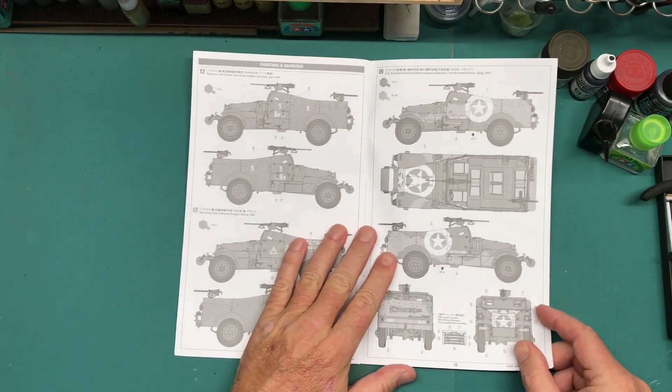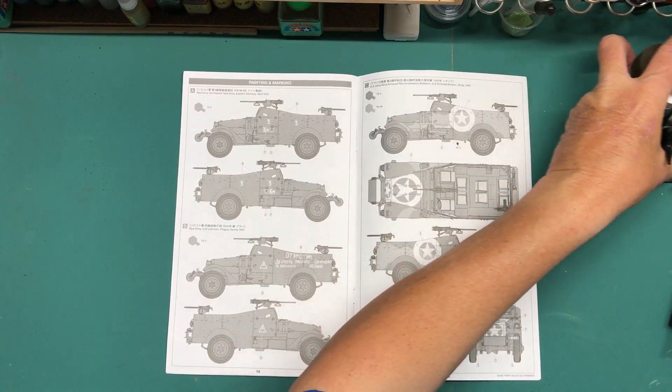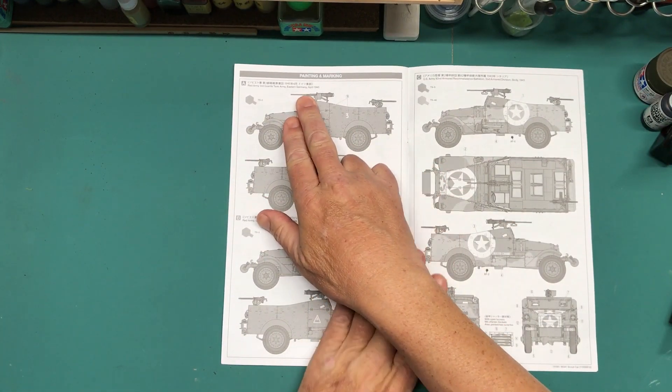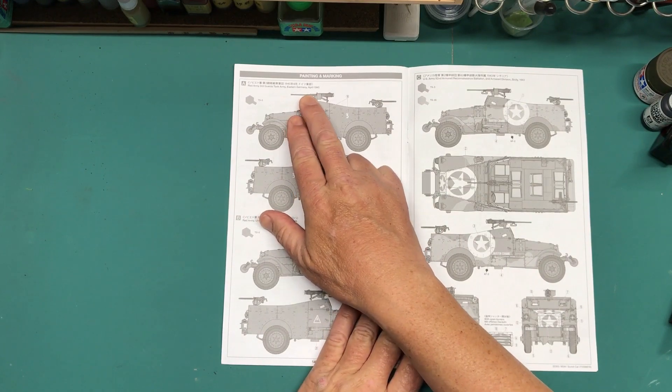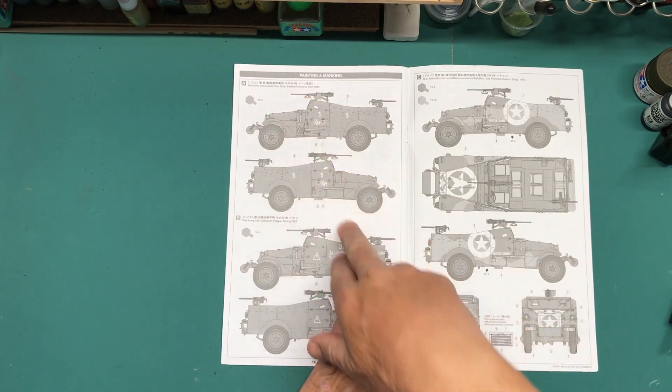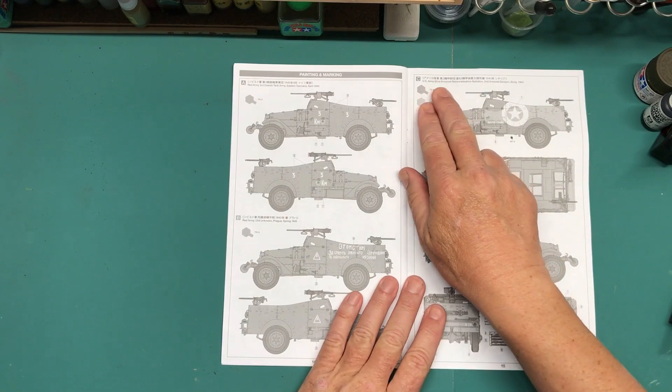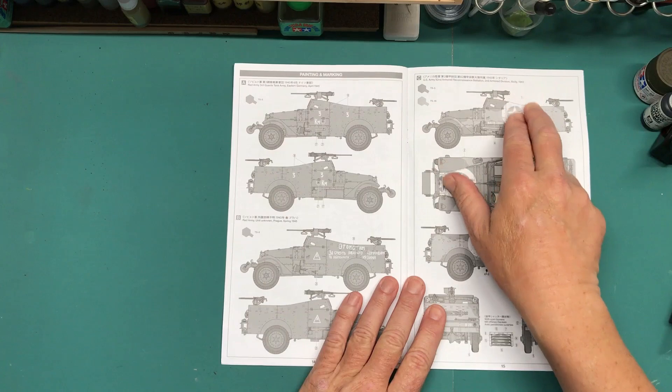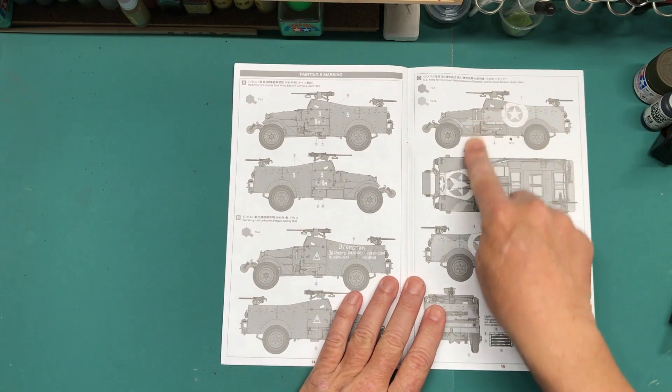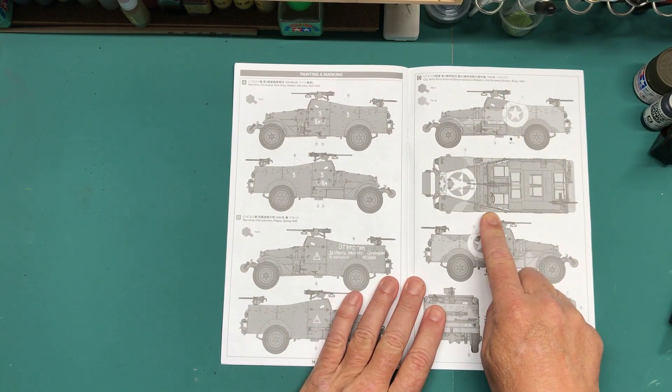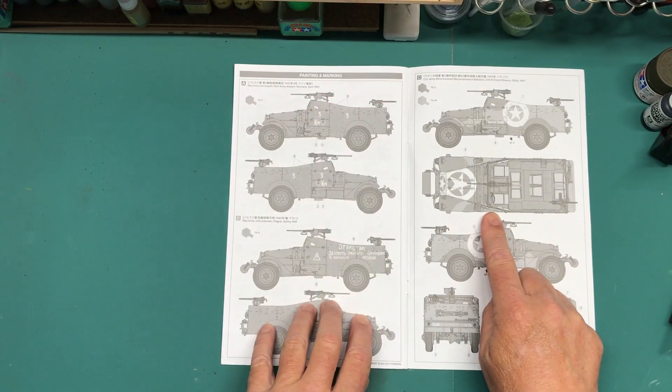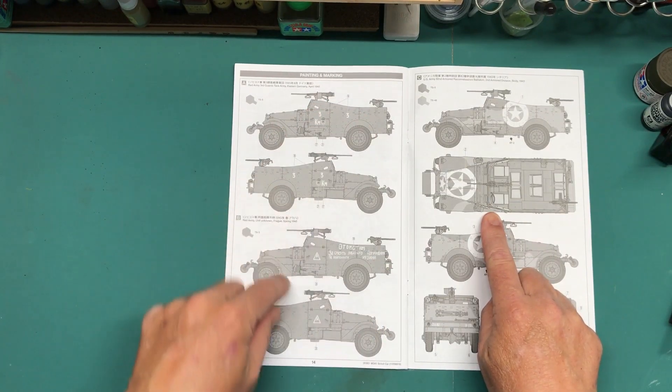And then there's basically two color schemes. There is Red Army Third Guards Tank Army, Eastern Germany, April 45. And then there is U.S. Army 82nd Armored Reconnaissance Battalion, Second Armored Division, Sicily, 1943. And that's a two-tone. But I'm going to do the Soviet version, the Red Army version because, oh actually there's two Red Army versions.